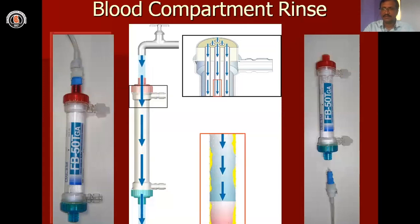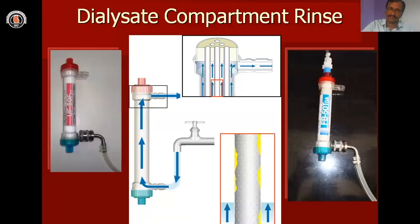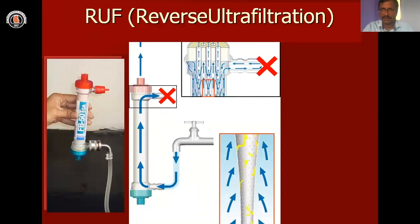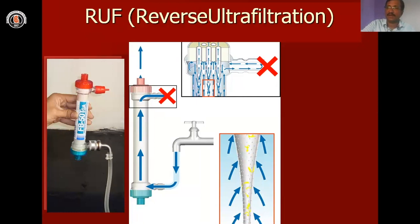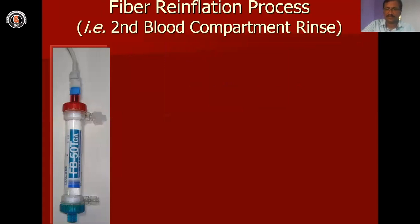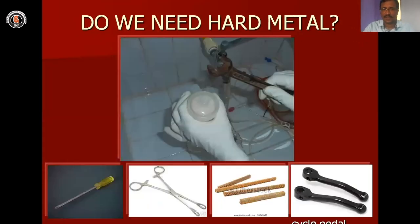The blood compartment should be cleaned first, followed by the dialysis compartment. When cleaning the dialysis compartment during manual reuse, a back-pressure block should be applied so that water moves from the dialysis compartment to the blood compartment — a reverse ultrafiltration — where better clearance will be seen. Cleaning the membrane properly is the most important thing. Do not use any hard metals to tap the dialyzer, as this will damage it. Do a gentle wash for the dialyzer — it is not like washing a vessel roughly.